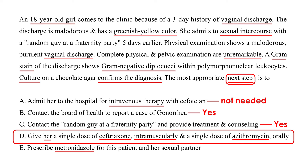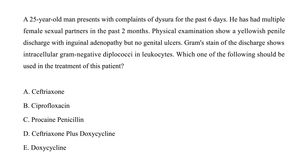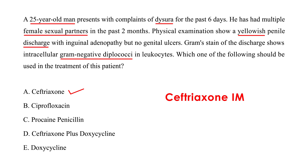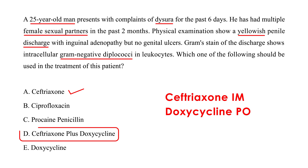Second vignette: A 25-year-old man presents with dysuria for six days and has had multiple female sexual partners. Physical exam shows yellowish penile discharge with inguinal adenopathy but no genital ulcers. Gram stain shows intracellular gram-negative diplococci and leukocytes. The correct treatment is ceftriaxone IM combined with doxycycline orally, since co-infection with chlamydia is so common and both must be treated simultaneously.